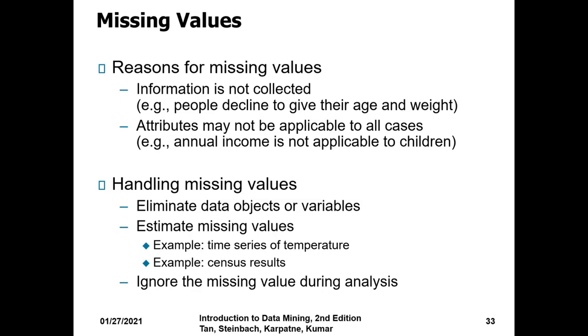Missing values could be like some people who would not give their age or weight because of privacy matters or annual income. These could be the reason for missing values. There are certain ways to compute it and different approximation ways like average, moving average, or other ways to compute it, or some standard values defined by the organization.